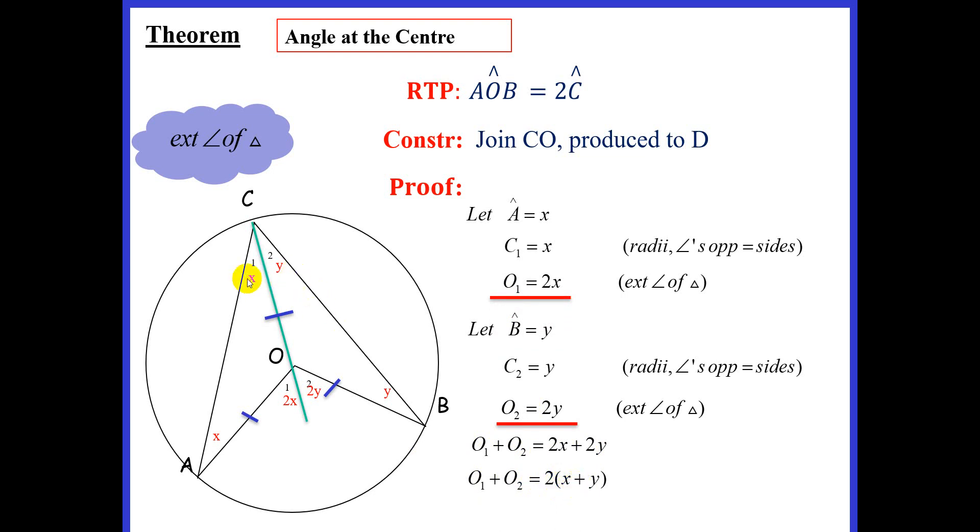But remember, if we look at our diagram, X plus Y is indicated by angle C. So we can replace O1 plus O2—there's our O1 plus O2, which is angle AOB—and that is equal to twice angle C.